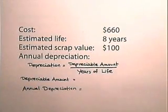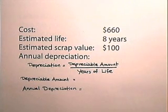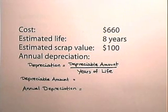Now let's use the straight line method to find the amount of depreciation and the book value of an asset. We have an asset that costs $660, with an estimated life of 8 years and an estimated scrap value of $100. We're going to find the annual depreciation and the book value at the end of 5 years.